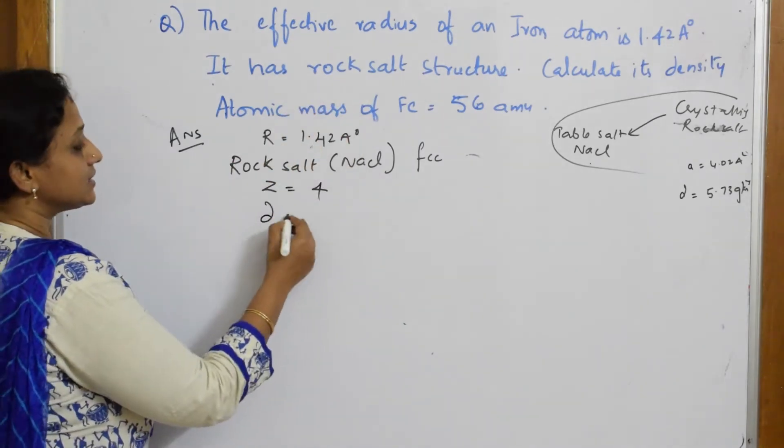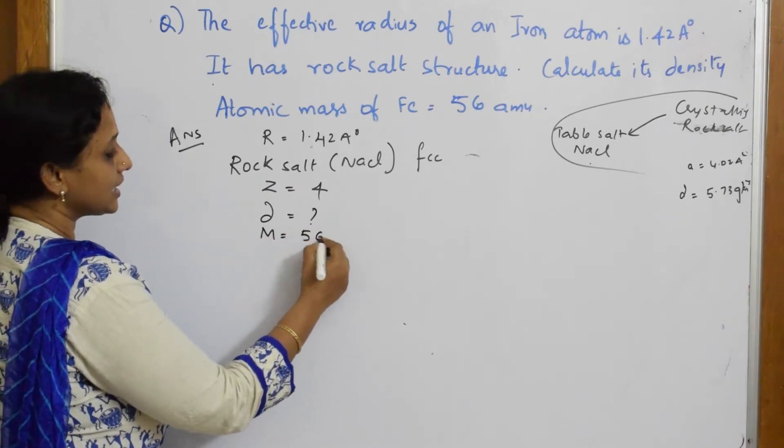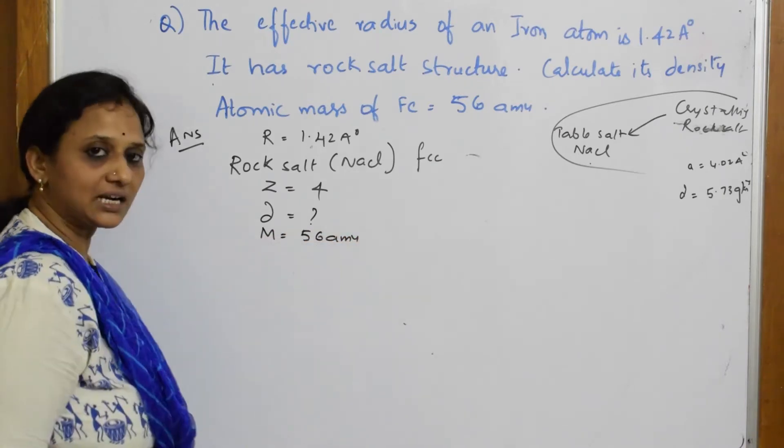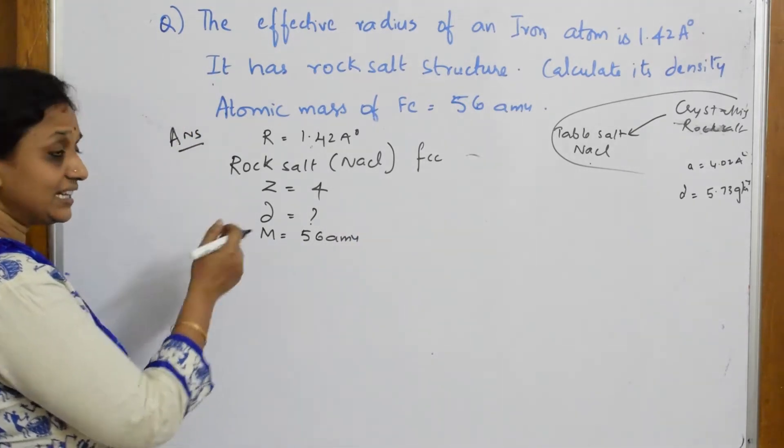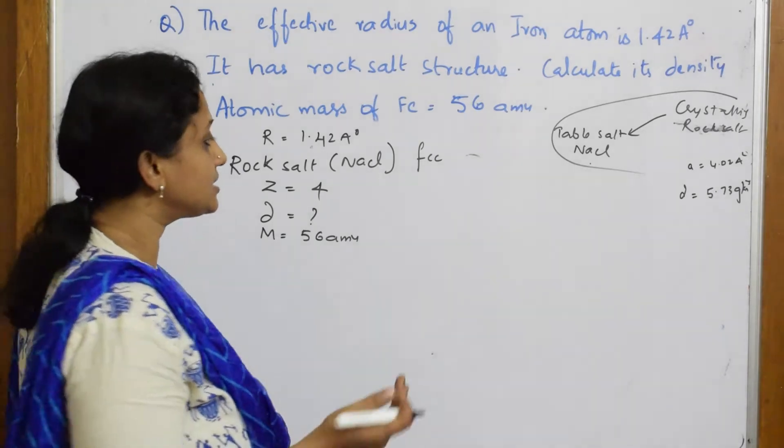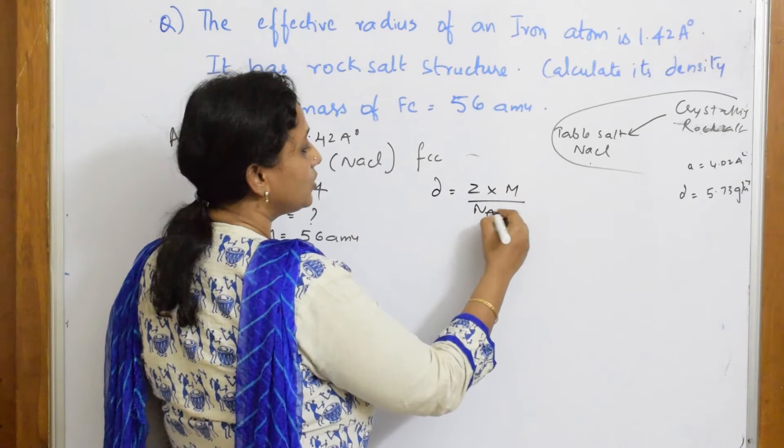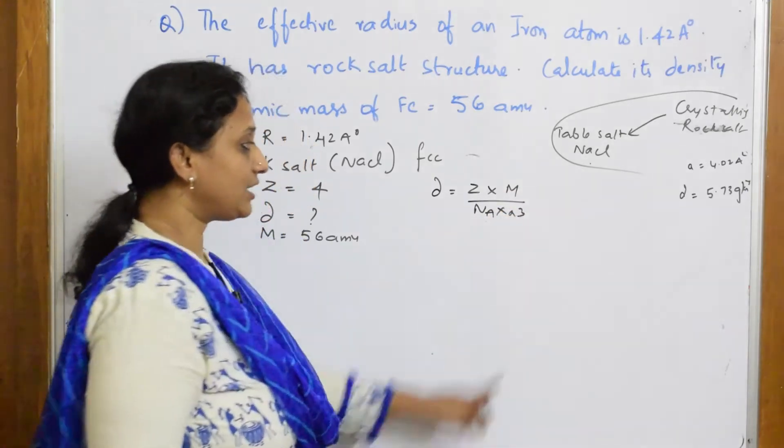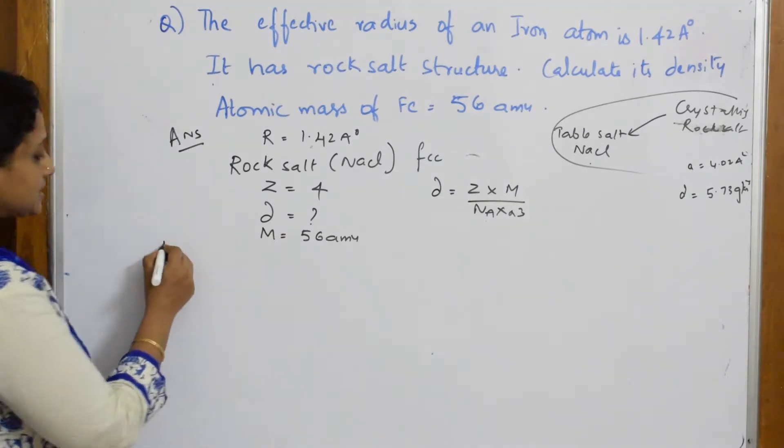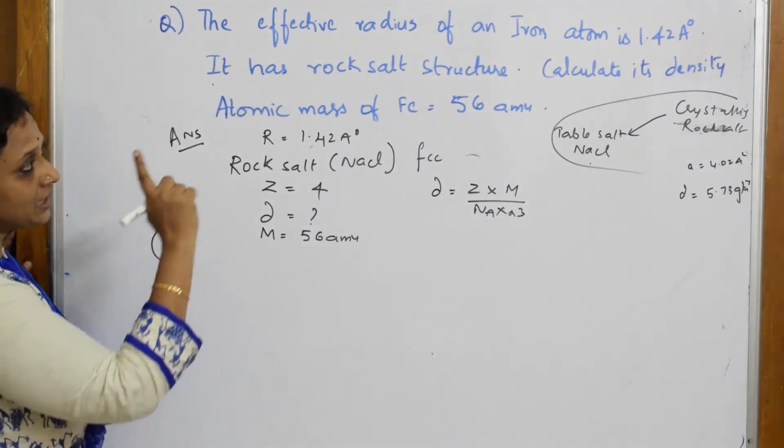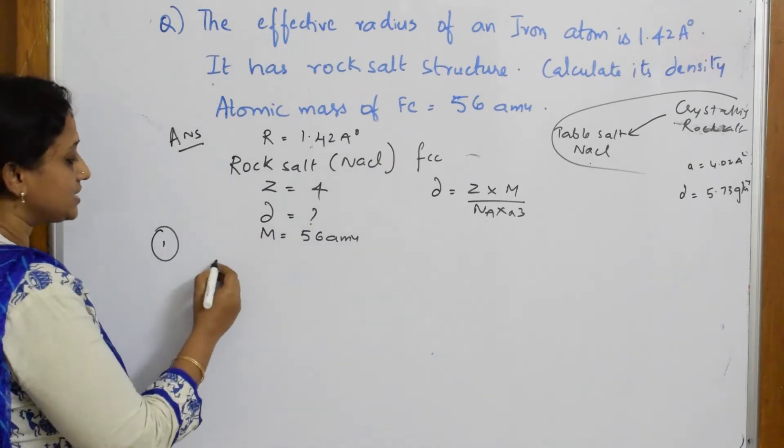Then I have to calculate its density. Mass is given to me 56 amu or gram per mole. Now, in the density formula, we have density is equal to Z into M by Na into A cube. Do we have A cube directly? We don't have. I have to calculate A cube. First, in step 1, let me calculate A cube.